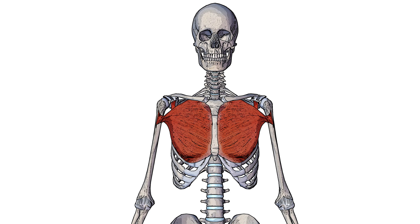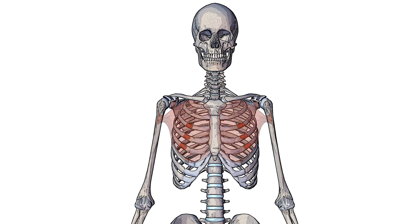If you'd like to learn more about the pectoralis major muscle, I'll put a link down in the description box so after you finish this video you can click on that and watch the pectoralis major video. As you can see highlighted here in red, the origin of the pectoralis minor is on the third, the fourth, and the fifth ribs.